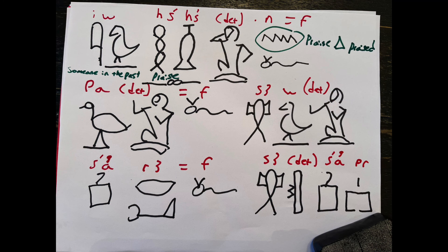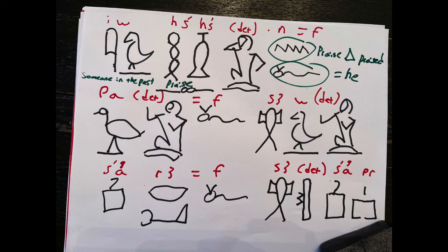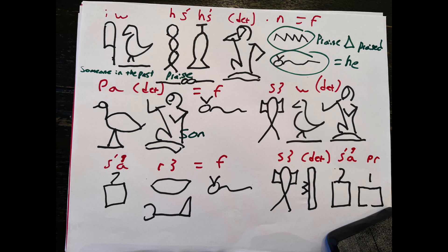Next, we have the water sign n, which turns praise into praised, past tense. And who did that praising? We have a nice pronoun after that of the horned viper, which hopefully you remember is the pronoun he. I'm using very similar words a lot because it helps.